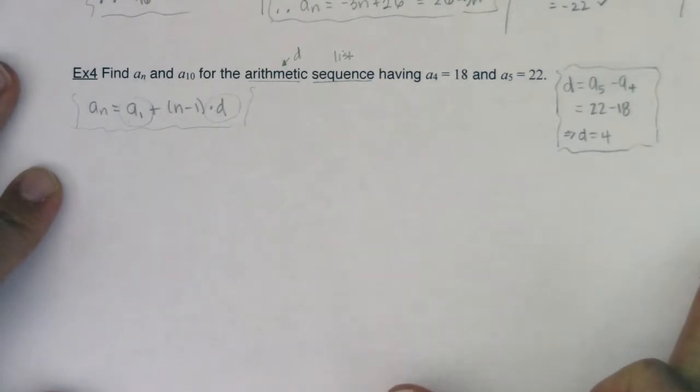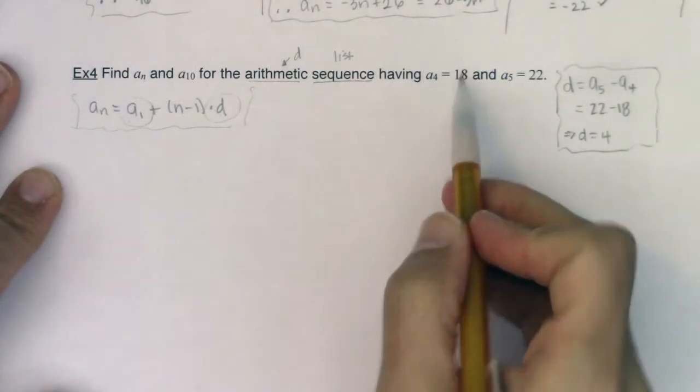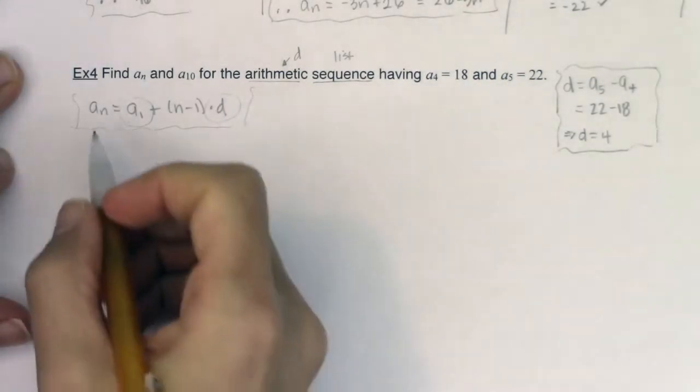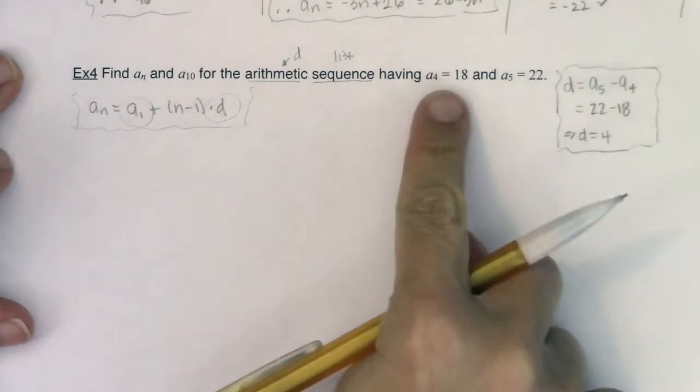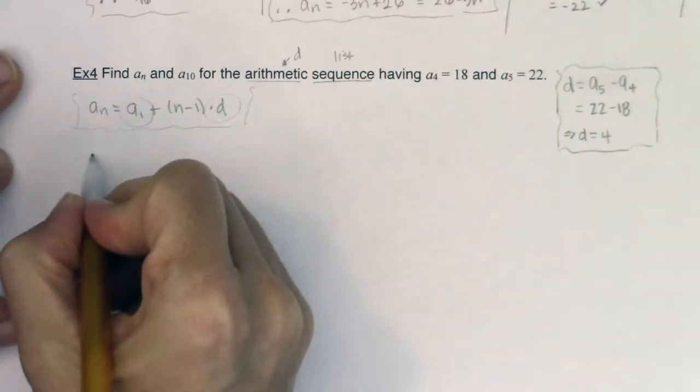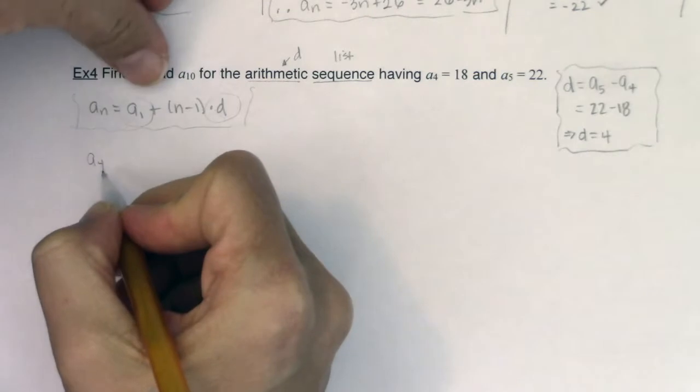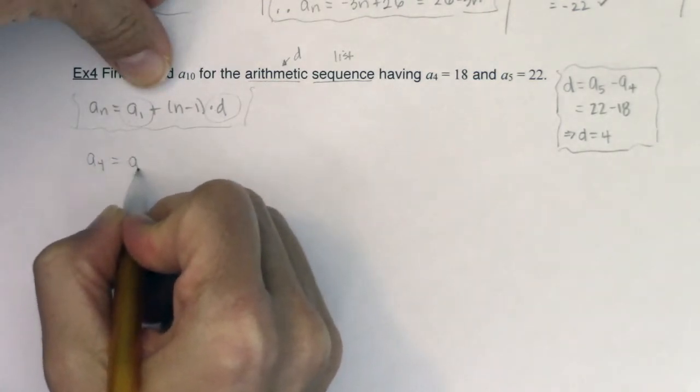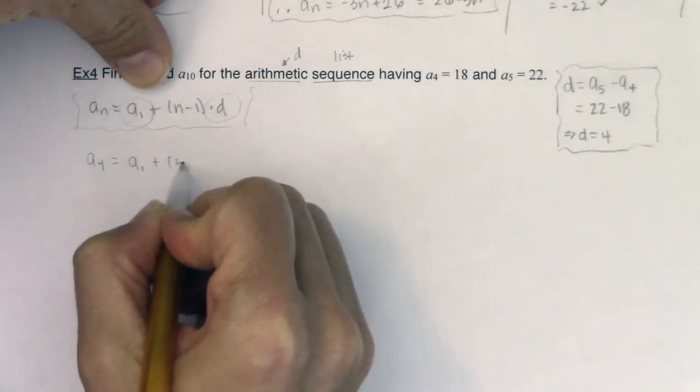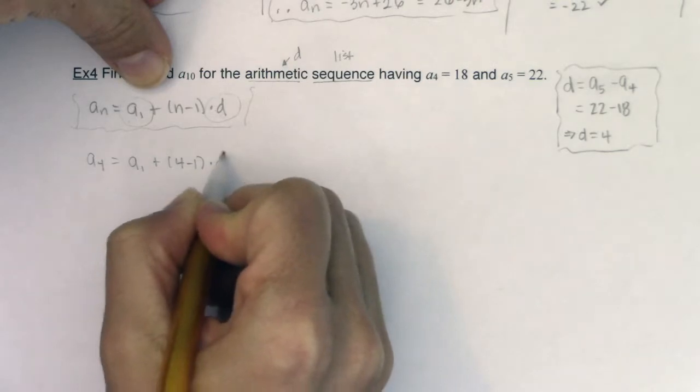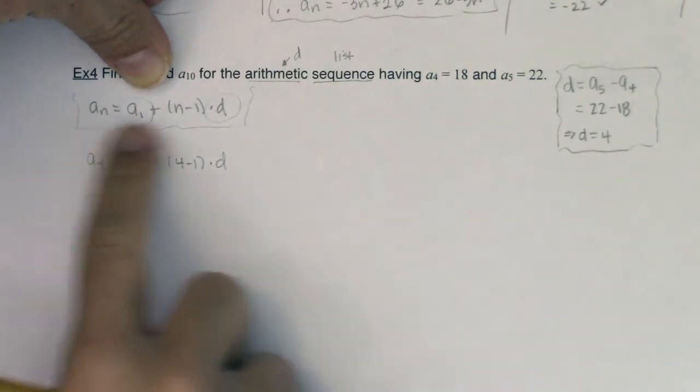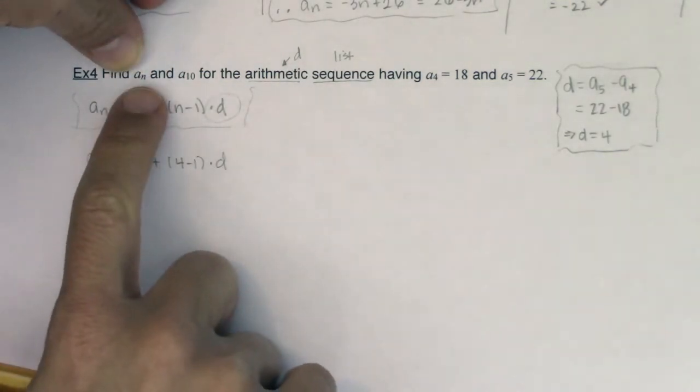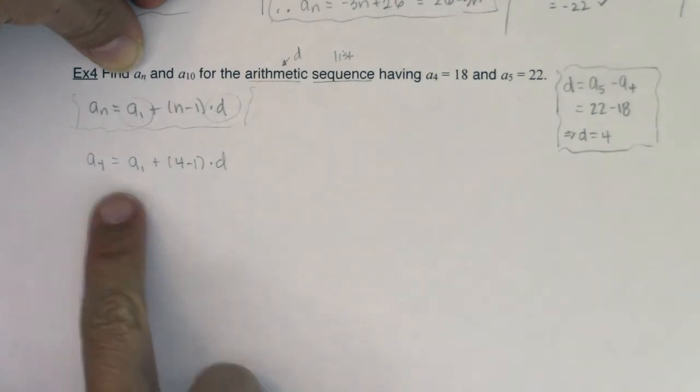Okay, so here we go. If you know that a_4 is equal to 18 and you know d, here we go. Watch this. And I can also do this with a_5. I'm just going to pick a_4. So you know a_4, according to this formula, would be equal to a_1 plus 4 minus 1 times d. So this is me now working this formula not to find a_n, but to find a_1.